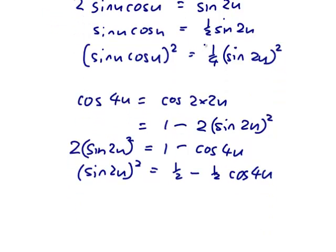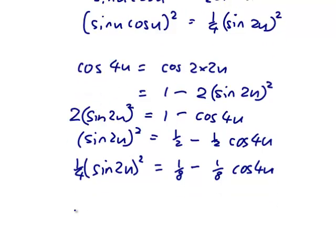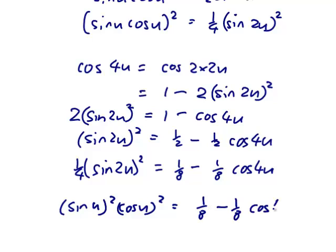And then we want a quarter of sin 2u squared. So a quarter of sin 2u squared would be a quarter of that which is an eighth and a quarter of that which is an eighth cos 4u. So finally we've got that sin 2u squared cos 2u squared is in fact an eighth minus an eighth of cos 4u.